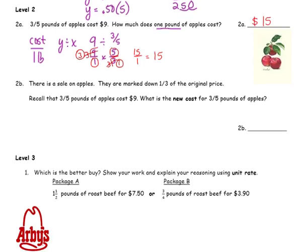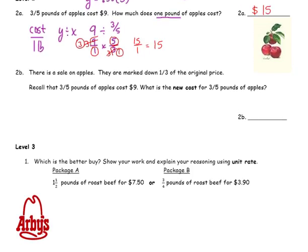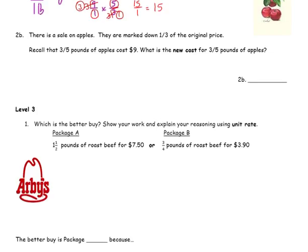They better be really good apples! There's a sale on apples — they're marked down a third of the price. Recall that three fifths of a pound costs $9. What is the new cost for three fifths of a pound?